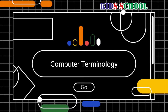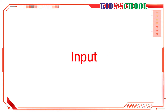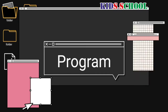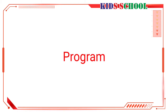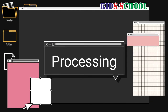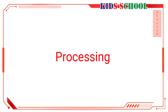Let's learn some basic computer terminology. The first one is input: data or raw facts entered into a computer are called input. Input could be numbers, letters, pictures, or even sound. The next one is program: a set of logical instructions given to a computer to perform a task or work on the data is called a program. Third is processing: when the computer works on the data according to the instructions, it is called processing.